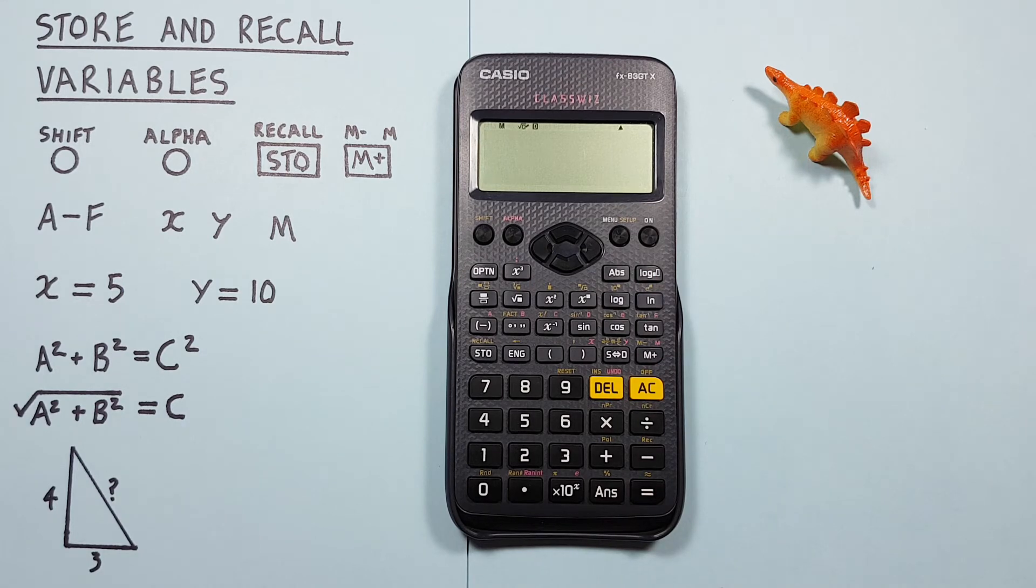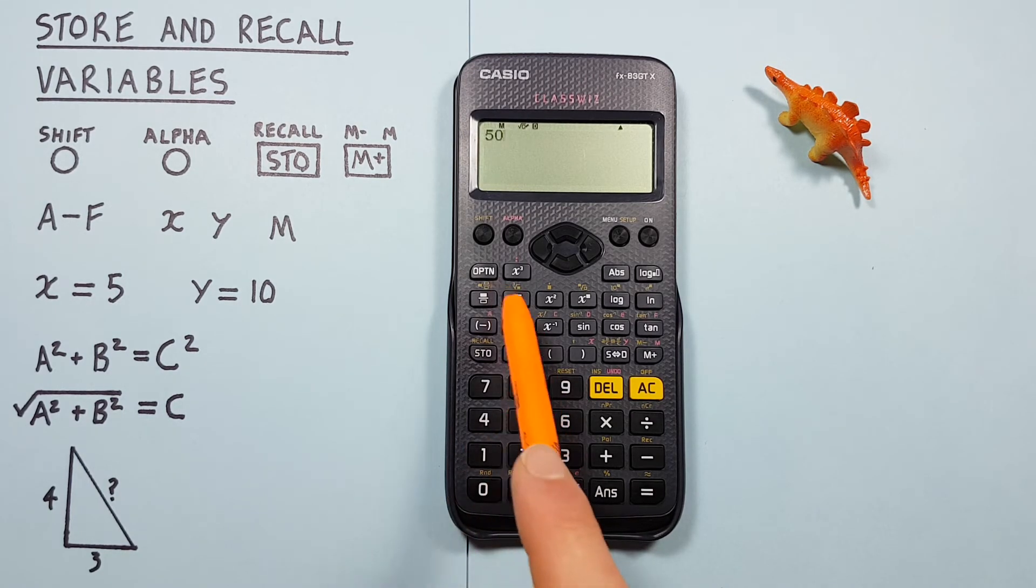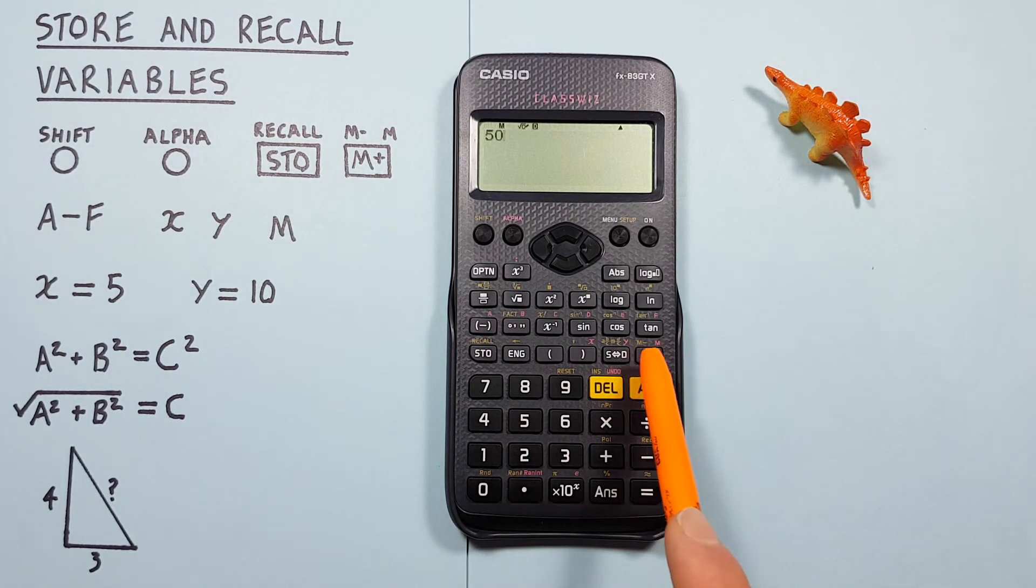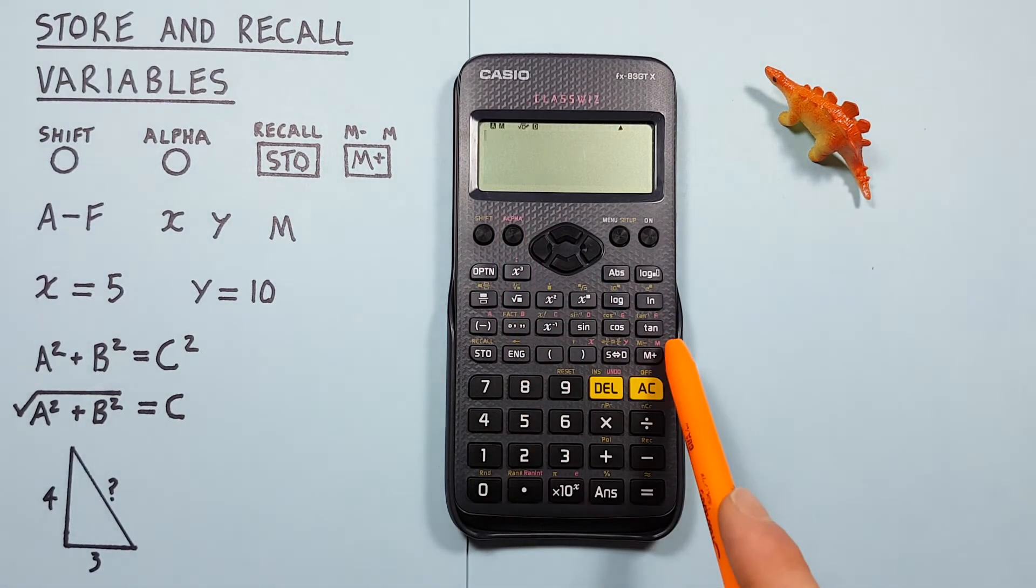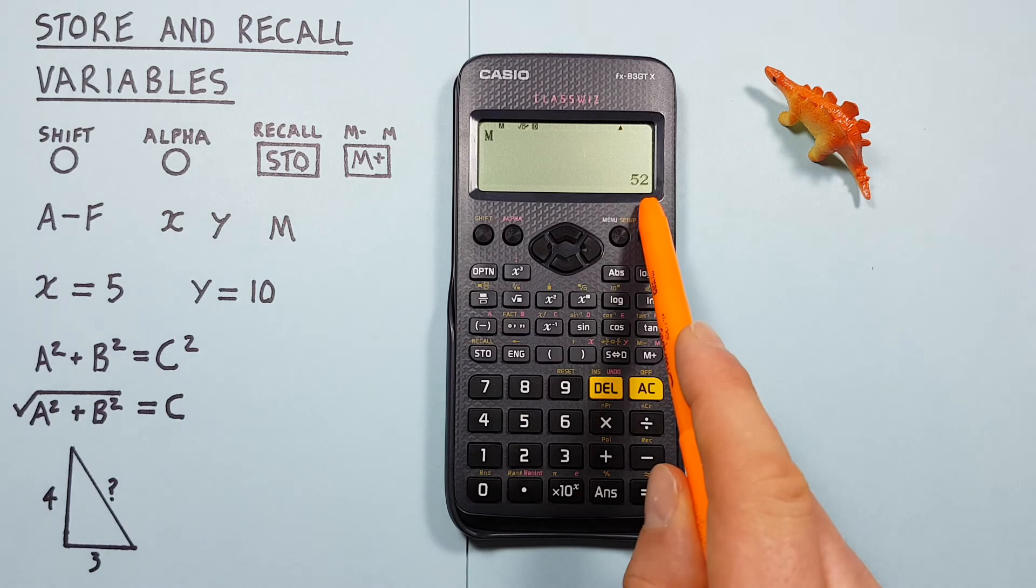We can subtract from this number the same way. Let's say we wanted to subtract 50. We place 50 on the screen and then we would use the shift function which is M minus, so we press shift M minus. And now when we use our M function we see it's 52.